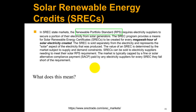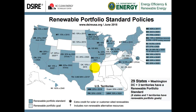So let's look at the renewable portfolio standard policies for the whole U.S. There are lots of different varying policies across the country — some states have very aggressive targets while others have none. Delaware is roughly in the middle, with a target of 25% renewable electricity by 2026.